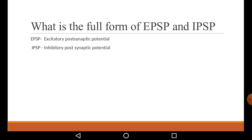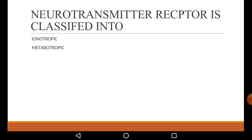What is the full form of EPSP and IPSP? EPSP stands for Excitatory Post-Synaptic Potential, and IPSP stands for Inhibitory Post-Synaptic Potential. Remember both full forms. Neurotransmitter receptors are classified into two: ionotropic and metabotropic.